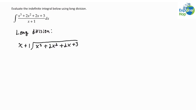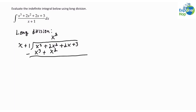Now we'll quickly perform long division. First we see that x squared times x gives us x cubed, so we'll write down x squared. x squared times x is x cubed, and x squared times 1 is x squared, so we add x squared. Now we subtract: x cubed minus x cubed is 0, and 2x squared minus x squared is x squared.